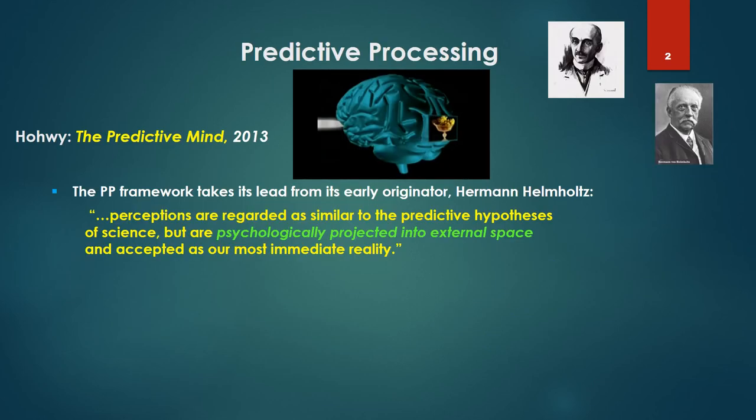So I'm going to begin with a set of notions taken from the book, The Predictive Mind, authored by Jacob Howey, 2013. Now the pronunciation might be Hoey, and if that's the true pronunciation, I apologize to Dr. Howey, but I'm going to stick with that pronunciation from henceforth. And so, as he notes, the Predictive Framework, or PP, takes its lead from its early originator, the great physicist Hermann Helmholtz. To quote, perceptions are regarded as similar to the predictive hypotheses of science, but are psychologically projected into external space and accepted as our most immediate reality.